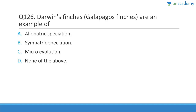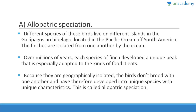Question 126: Darwin's finches of the Galapagos are a typical example of allopatric speciation. They are on different islands of the Galapagos Archipelago near Ecuador, isolated from one another by the ocean. Over millions of years, each species developed a unique beak adapted to its food source. Because they are geographically isolated, they don't interbreed and have developed unique characteristics.